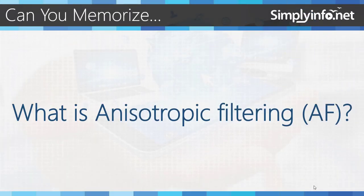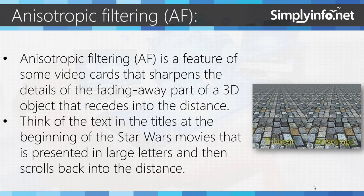So can you memorize what Anisotropic Filtering (AF) is? It is a feature of some video cards that sharpens the details of the fading away part of a 3D object that recedes into the distance. Think of the text in the titles at the beginning of the Star Wars movies, presented in large letters and then scrolling back into the distance.